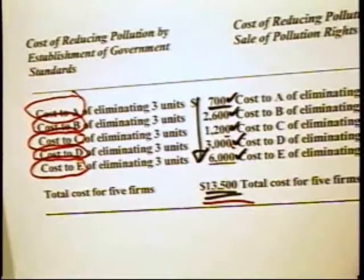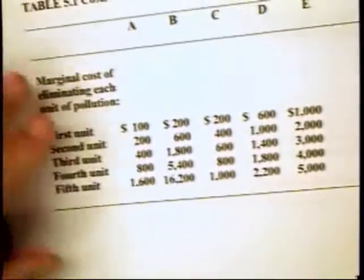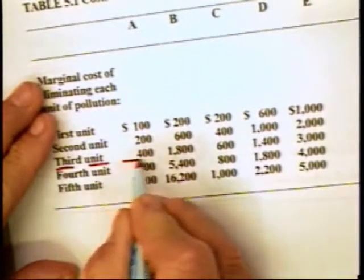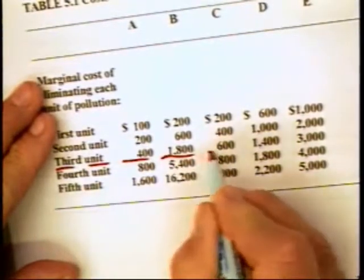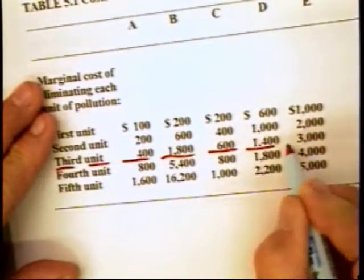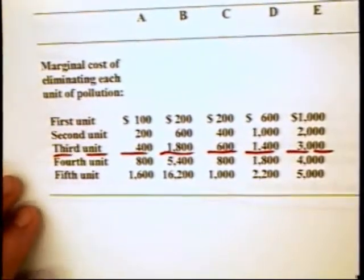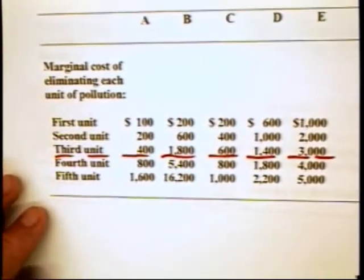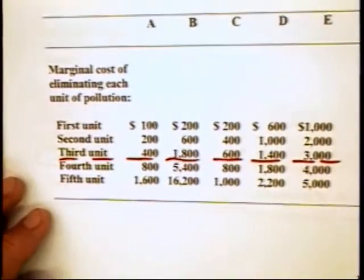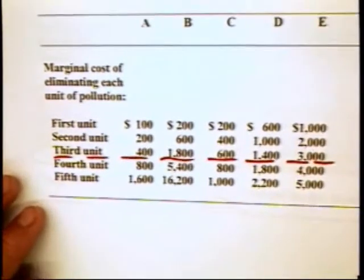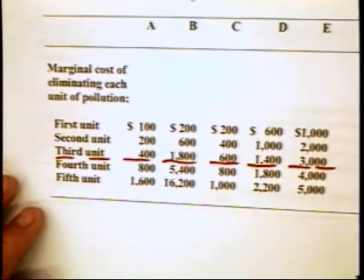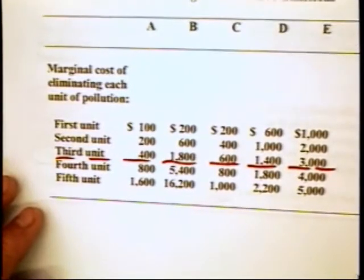The reason firms would vote for the standards method is very simple. Under the standards method, each firm is basically given two rights to pollute, and firms would prefer to be given rights to pollute than to have to buy them.